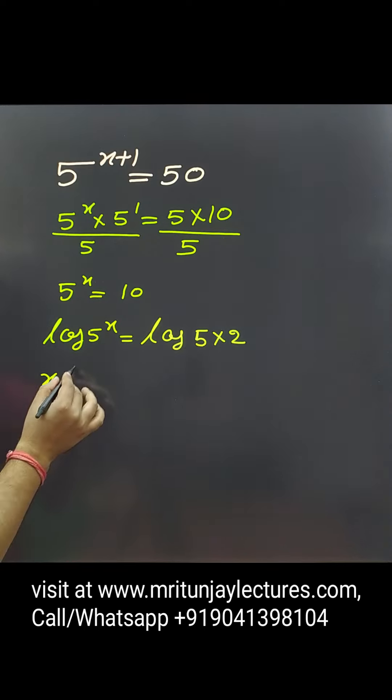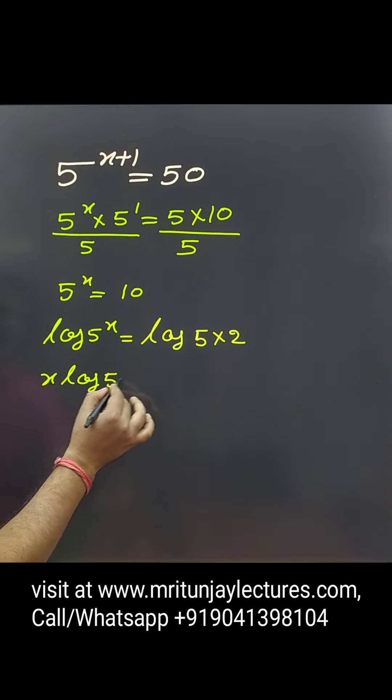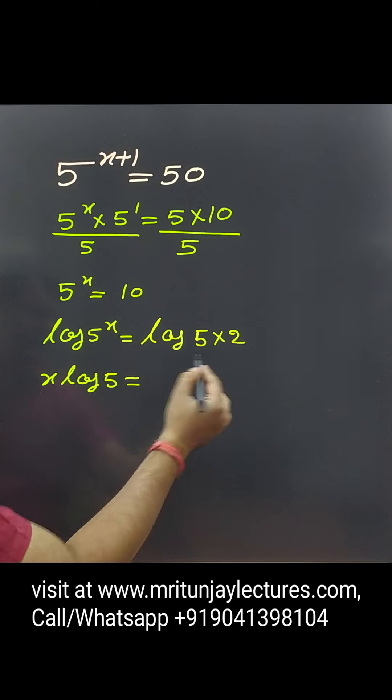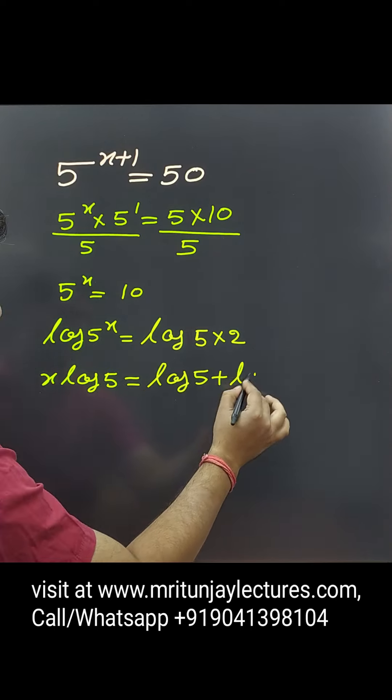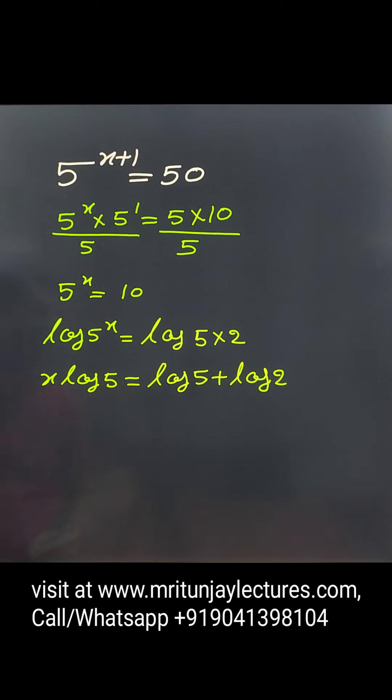After that, x times log 5 equals log 5 plus log 2. Now, what about x? x is equal to log 5 plus log 2 divided by log 5.